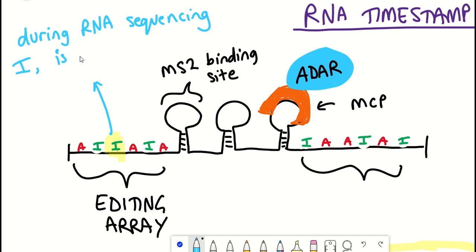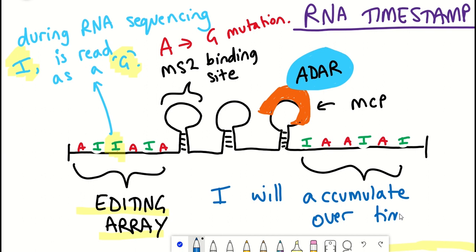So what happens in this setup then is that the ADAR enzyme is recruited to the RNA timestamp, where it can then convert these adenosine molecules in the editing array into inosine. The unique thing about inosine is that it's non-conventional in RNA. And when it gets sequenced, it gets read as guanine. And so from the RNA sequencing point of view, you end up with an A to G mutation. So within the editing array, there are lots of different adenosine molecules that can be converted to inosine. And so the longer the RNA is present within the cell, the greater the chance more of these adenosines will be converted to inosine.